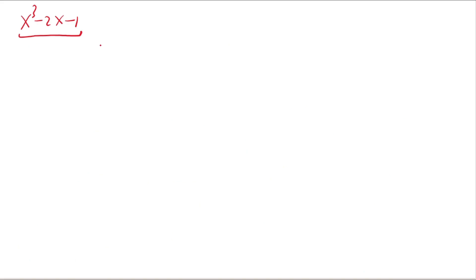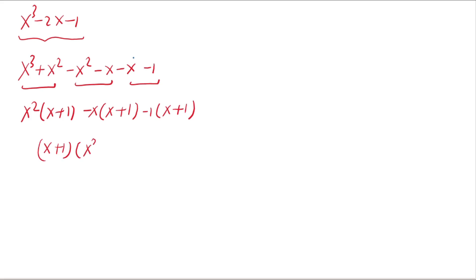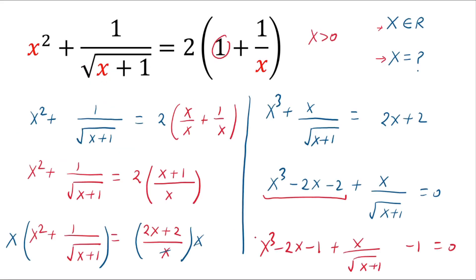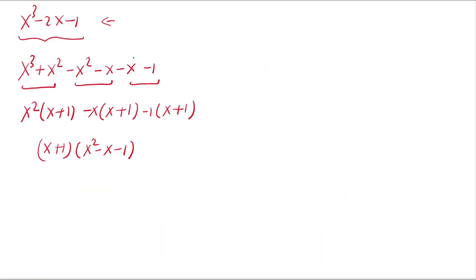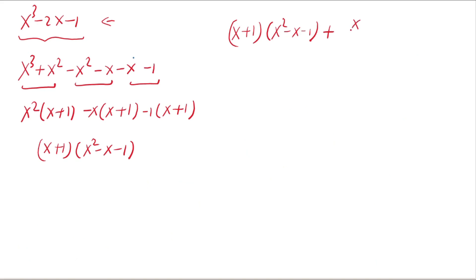To factor the cubic expression, we write x cubed, adding and subtracting x squared, giving x squared(x plus 1) minus x(x plus 1) minus 1(x plus 1). Taking common factor x plus 1, we get x plus 1 times x squared minus x minus 1. So the cubic expression is replaced by x plus 1 times x squared minus x minus 1, plus x over square root of x plus 1 minus 1, all equaling 0.